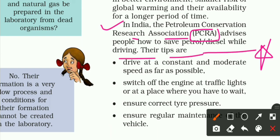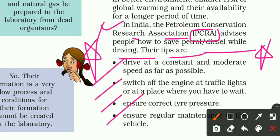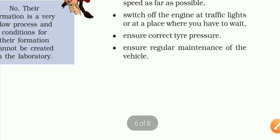PCRA ke tips hain: maintain moderate and constant speed while driving — ek dum se tez ya dheere nahi karna. Switch off the engine at traffic lights. Ensure correct tire pressure. And maintain proper vehicle maintenance to reduce fuel consumption and pollution.